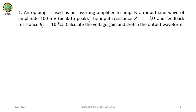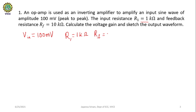Coming to the first problem: an op-amp is used as an inverting amplifier to amplify an input sine wave. The input is a sine wave with amplitude 100 millivolts peak to peak. The input resistance R1 equals 1 kilo ohm, and the feedback resistance Rf equals 10 kilo ohm. They ask to calculate the voltage gain and sketch the output waveform.